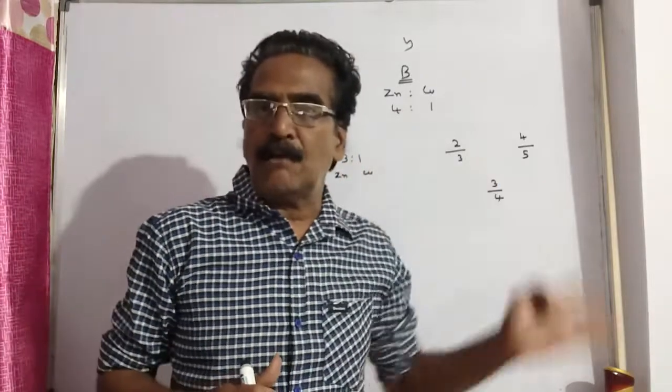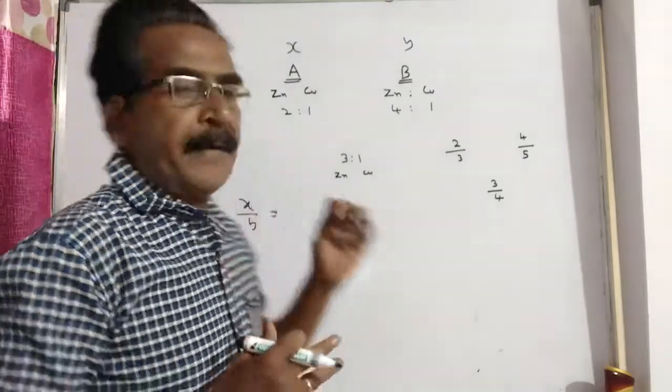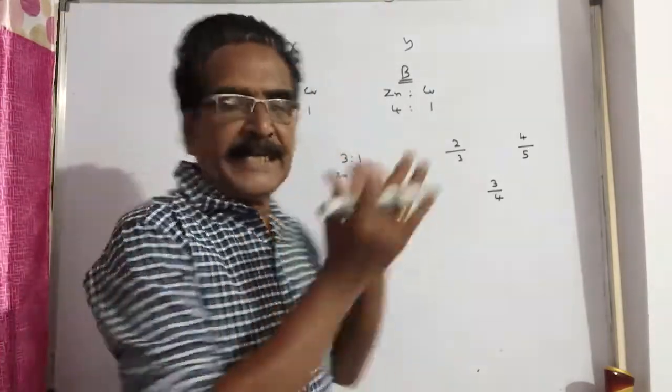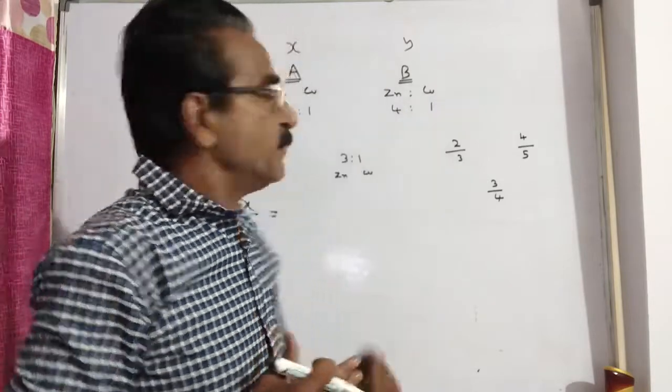Now see, this problem can be solved by applying rule of allegation. We get the quantities ratio, that is x to y.